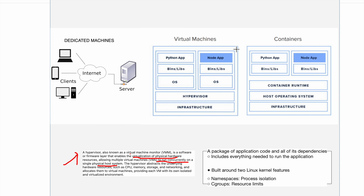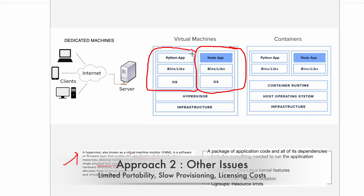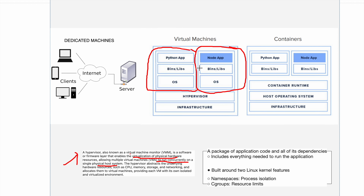The hypervisor allows multiple virtual machines to run concurrently on a single physical host system. It abstracts the underlying hardware resources — such as CPU, memory, storage, and networking — and allocates them to virtual machines, providing each VM with its own isolated virtualized environment. That isolated virtualized environment is very important: something running in one VM should not cause issues to another.